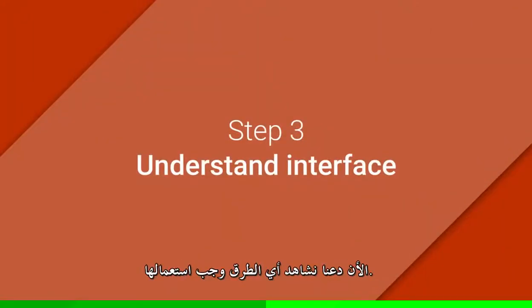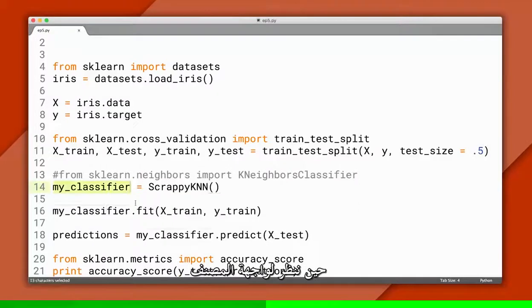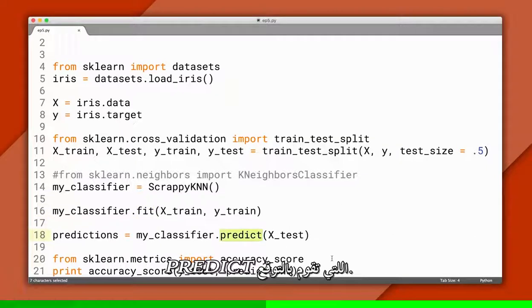Now let's see what methods we need to implement. Looking at the interface for a classifier, we see there are two we care about. Fit, which does the training, and predict, which does the prediction.